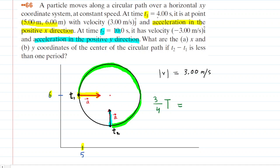Well, t1 was four seconds and t2 was 10 seconds. So to figure out how much time has elapsed, then of course we can just subtract those two times from one another. So we now know that three-fourths of the entire period of this particle's motion is equal to six seconds.